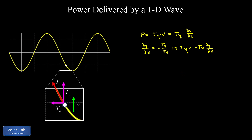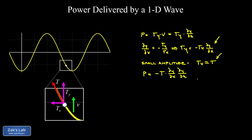The small amplitude approximation is realistic for most waves — like a guitar string, where vibrations are barely perceptible. Mathematically, when the angle is very flat, the hypotenuse of the force triangle is approximately equal to just Tx, the horizontal side. So for small amplitudes, we replace Tx with simply T — the tension in the string. Substituting, the power becomes P = −T (∂y/∂x)(∂y/∂t), where y = A cos(kx − ωt).